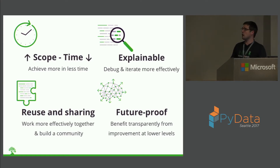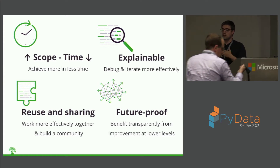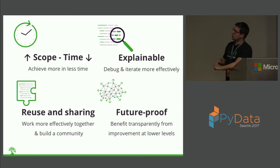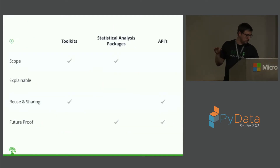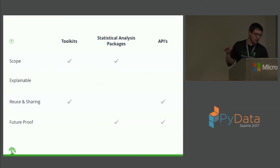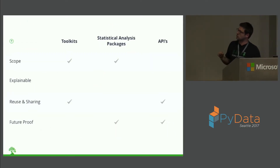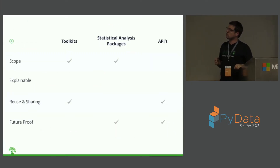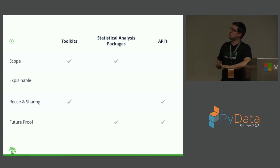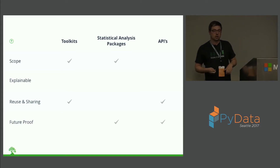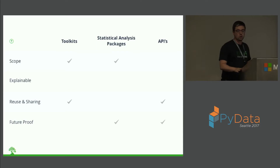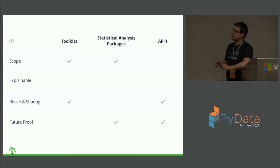At Banzai our goal is to bring some of this to AI. When we looked across the market today we saw three approaches to programming with AI and machine learning. The most common are things like toolkits — your H2O or TensorFlow. These toolkits are great because they give you incredible amounts of control.